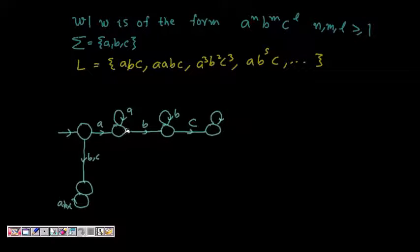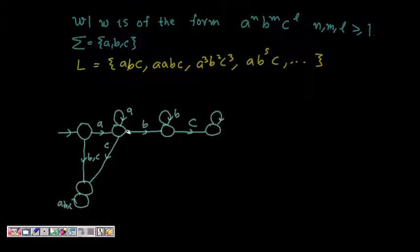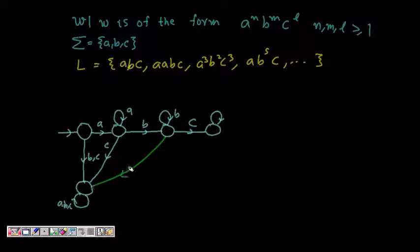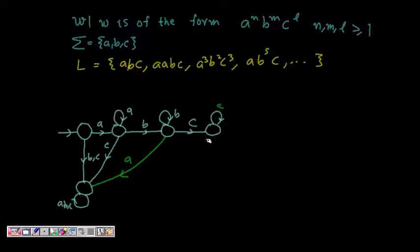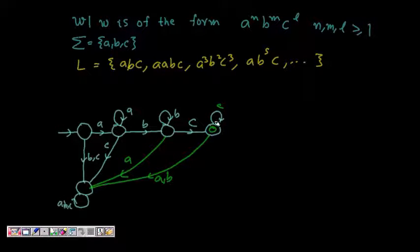After getting one 'a', if you get a 'c' instead of moving toward 'b', that is a problem and you reach the dead state. Similarly, after getting a, b — if you then get an 'a' again, that is also a problem and you go to the dead state. In the end, after getting a^n b^m c^l, you should only get 'c'. If you get 'a' or 'b' again at the end, you go to the dead state.